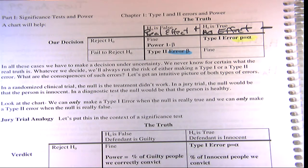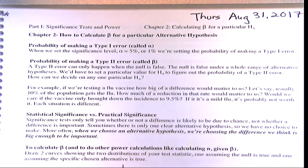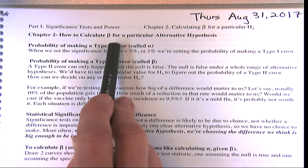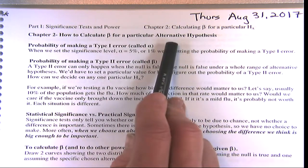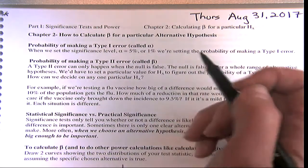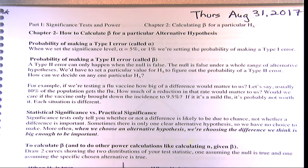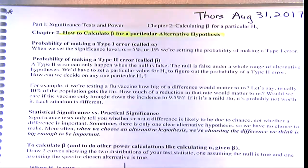When there's a whole range of alternatives, we have to pick a specific alternative to be able to calculate the probability of the Type 2 error. That's what we're doing today — calculating the probability of a Type 2 error. This starts on page 5, Chapter 5: how to calculate beta, the probability of a Type 2 error, for a particular alternative hypothesis.